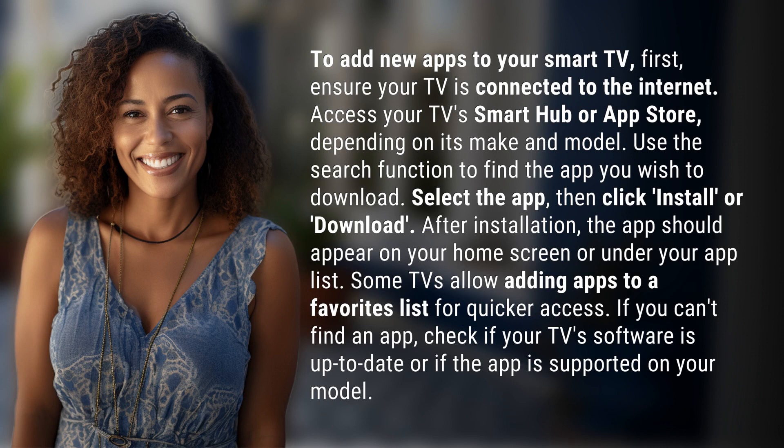Use the search function to find the app you wish to download. Select the app, then click Install or Download. After installation, the app should appear on your home screen or under your app list.